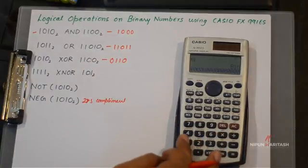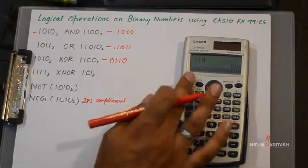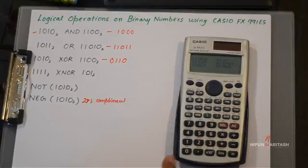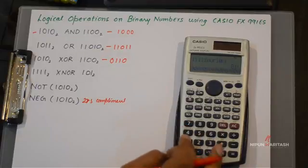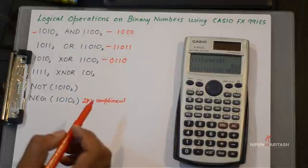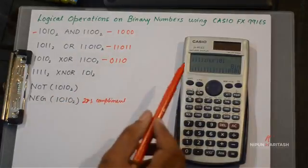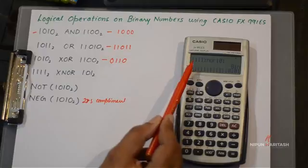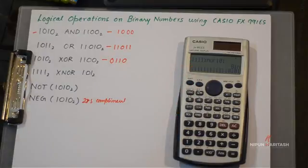And then we have the fourth option, XNOR. Now you can see when we enter 1111 it actually takes 12 zeros followed by 4 ones.